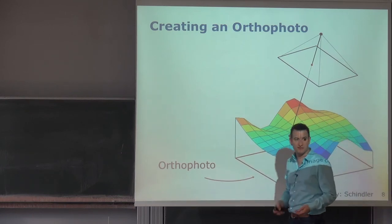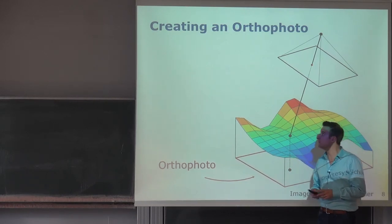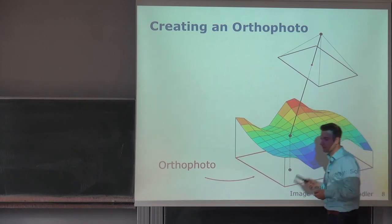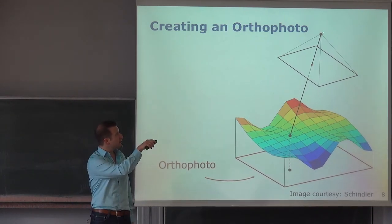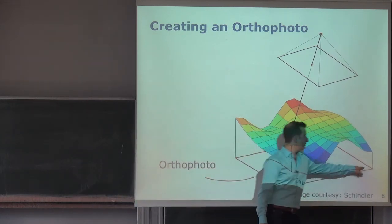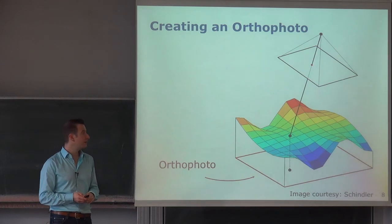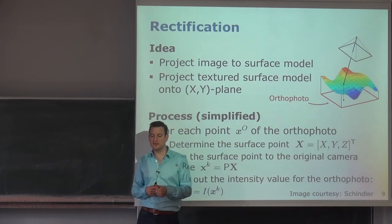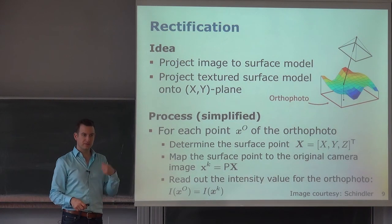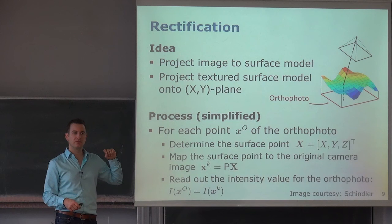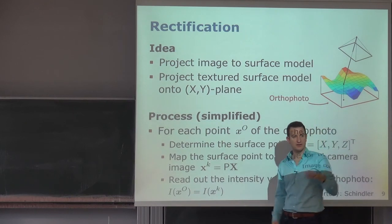Since we can't actually be infinitely far away, satellites can be a good approximation. Given a 3D structure, the input image, and the camera location, the output should be the orthophoto. The key idea is to project the image onto the surface to get color values for individual height values, and then project those points onto the XY plane to generate the orthophoto.